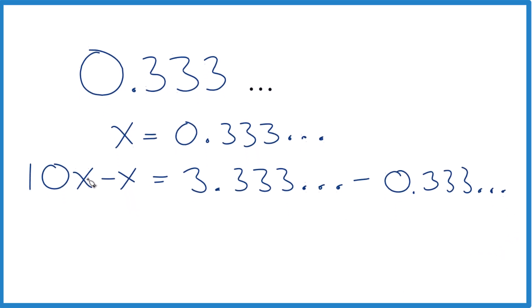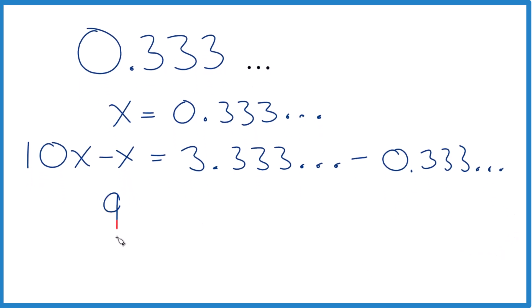Now check it out. 10x minus x is 9x, that's kind of nice. And right here, this and this is the same. So when I subtract, I get 0. Now 9x equals 3.